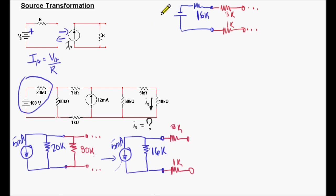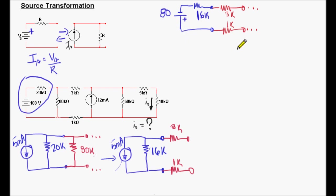I forgot to mention: we have to pay attention to this. Here, the positive terminal of the voltage source must be on the same side as the arrow tip. Here the arrow tip is pointing down, and the positive terminal of the voltage source is also down. Now let's look at our circuit again — we can see that the 16k and 3k ohms are in series.